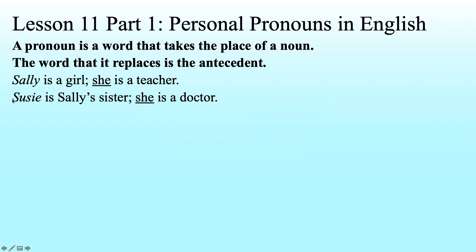But in the second sentence, 'Susie is Sally's sister. She is a doctor,' 'she' is referring back to Susie. So in that sentence, 'she' means Susie — Susie is the antecedent. The thing about pronouns is they change meaning based on what their antecedent is. They have the same inherent definition regardless of what sentence they're in, but what they're actually referring to changes based on the antecedent for that particular situation.